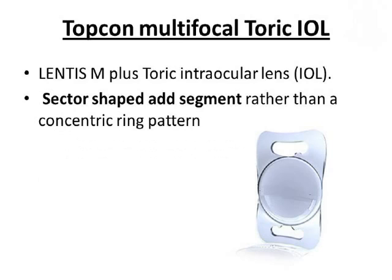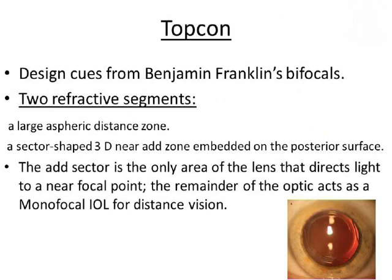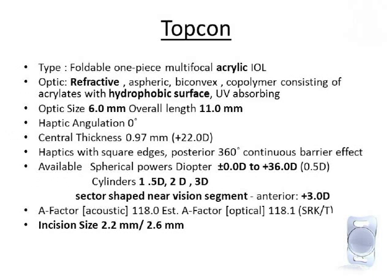The Tophat multifocal toric IOL, unlike the concentric ring pattern, has a crescent-shaped add segment — an idea taken from the bifocal glasses of Benjamin Franklin. It is a refractive IOL with a hydrophobic surface. The overall diameter is 11mm and the optic diameter is 6mm. It is available from 0 to 36 diopters spherical and 1.5 to 3 diopters cylindrical. It has an add power of +3 diopters and can be implanted through an incision of 2.2 or 2.6mm.